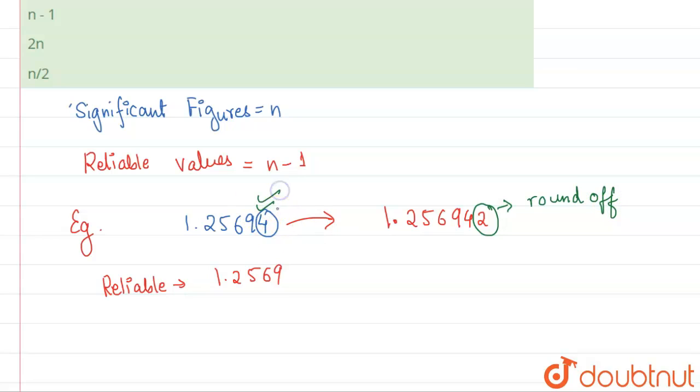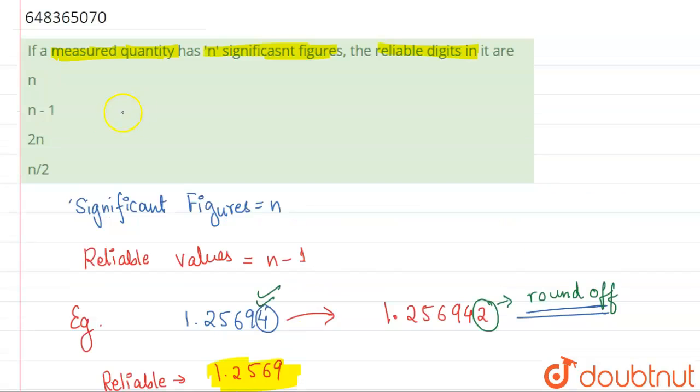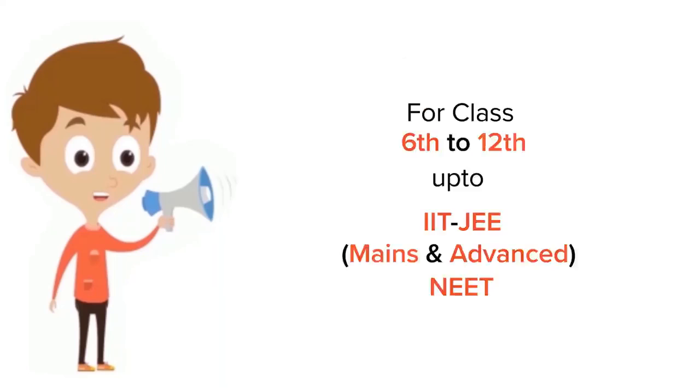an unreliable digit. Due to this, error occurs. That's why the only reliable digits are n minus one, because the last digit may be rounded off. So our answer will be clearly option number B, that is n minus one. Got it, thank you.